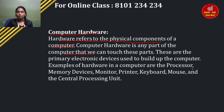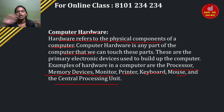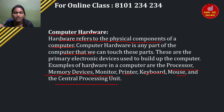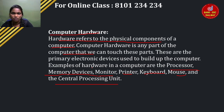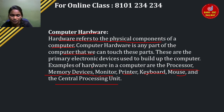For example, hardware includes: processor, memory devices, monitor, printer, keyboard, mouse, and central processing unit. The processor chip, memory devices such as RAM, ROM, and CD disk — these are all hardware. The monitor and printer are added to the computer. In the computer, you can print using the printer, type using the keyboard, and use the mouse. The CPU is the central processing unit. It's all hardware.